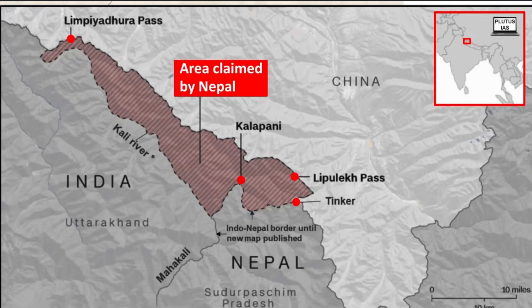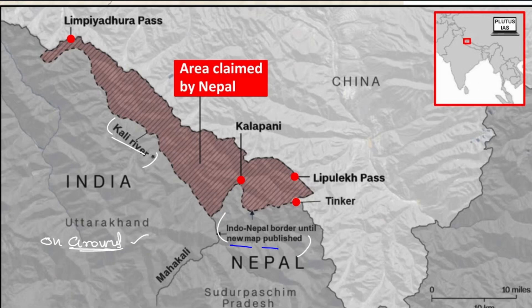Looking at the same map from a different view — this is the Indo-Nepal border until a new map is published. The Kali River forms the current on-ground border. The Kalapani area and Lipu Lake Pass and Tinker are disputed between India and Nepal. Please remember their general locations. On the ground, India has more to say here.